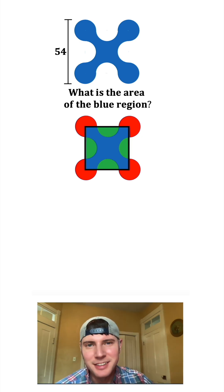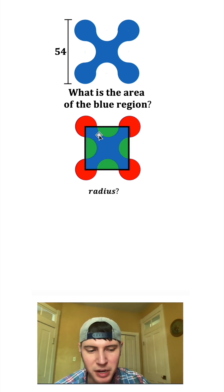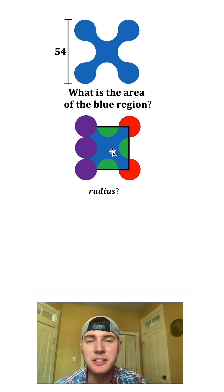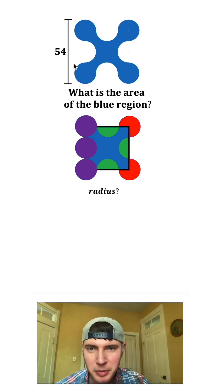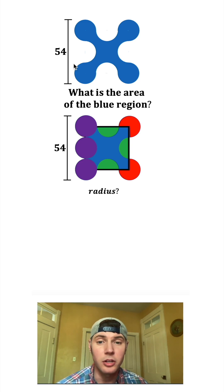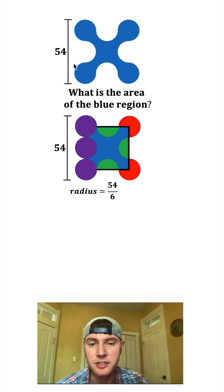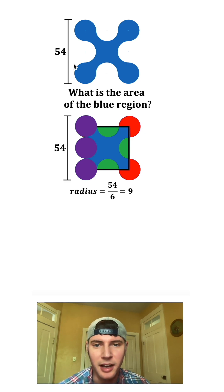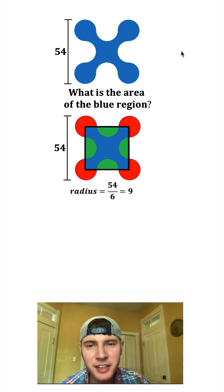Let's calculate the radius of each of these circles. We can make the red circles purple, and we can make this semicircle purple. We can see that it's three circles tall. From up here we can tell that it's 54 tall, so if we do 54 divided by 6, that will give us the radius of 9. The reason we divided by 6 is because there are six radii in the height of the figure.